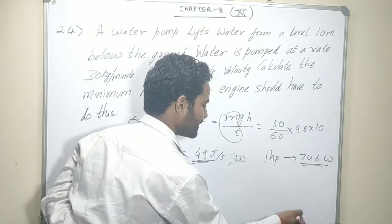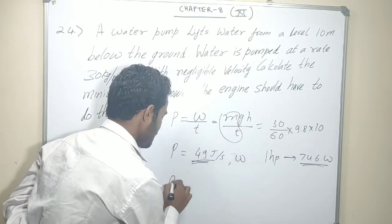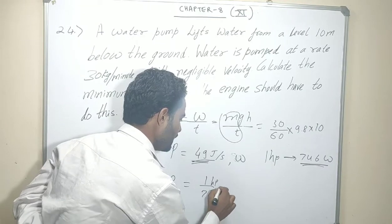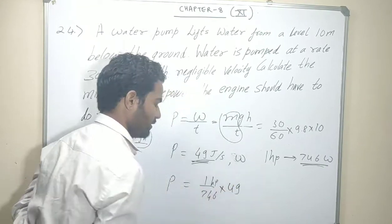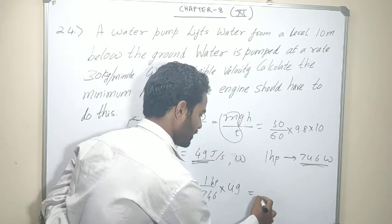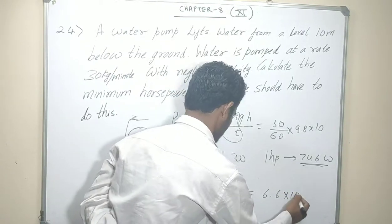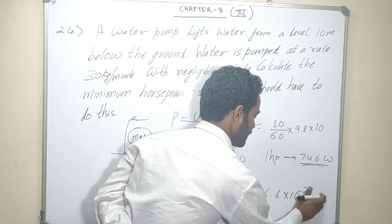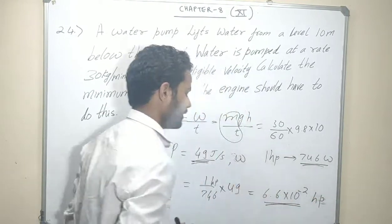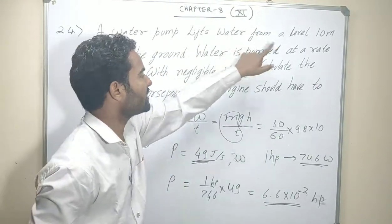This power is now if you have 49 Watt, how can we do it? We can do it with unity method. 1 HP divided by 746 into 49. Right? This answer will be 6.6 into 10 minus 2 HP. 6.6 into 10 minus 2 HP.